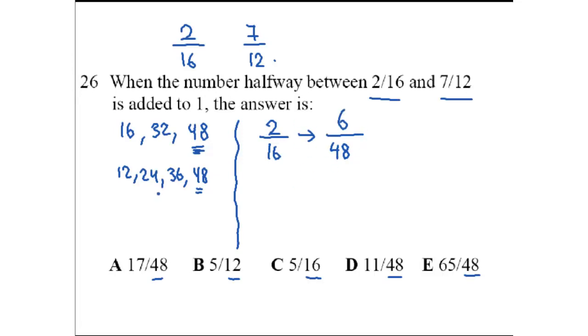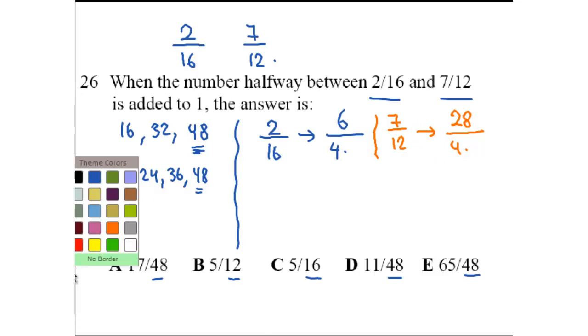Similarly, for 7 over 12 to become something over 48, we multiply by 4. So 7 times 4 up here is 28. So these are my two numbers now. Let me just get my 8's in place here.